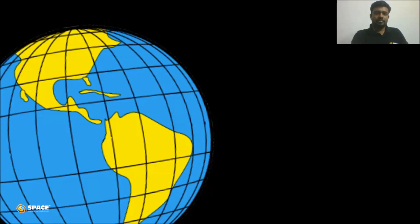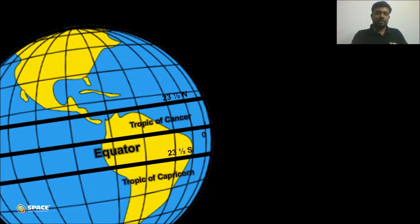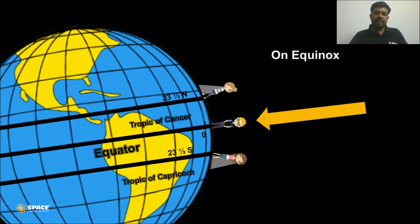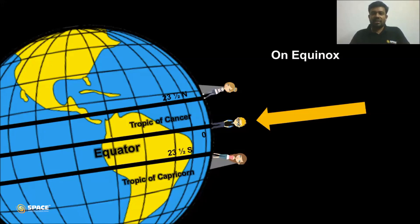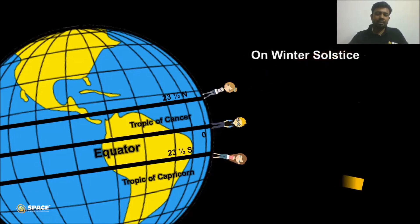Consider three persons standing at the equator, Tropic of Cancer, and Tropic of Capricorn. On the day of equinox, the sun is overhead for people on the equator — sun rays fall parallel above their heads, so they experience a zero shadow day. People on the Tropic of Cancer and Capricorn have sun rays that are not parallel, so they experience a shadow. On the day of summer solstice, the sun is exactly overhead on the Tropic of Cancer, so those people observe zero shadow day, while people on the equator and Capricorn experience a shadow. Due to earth's spherical shape, the zero shadow day does not fall on the same date for people living between these latitudes.